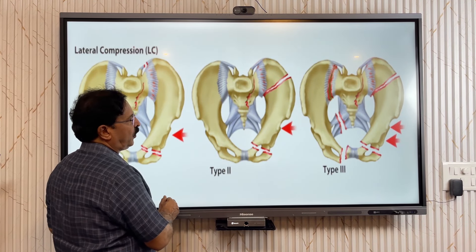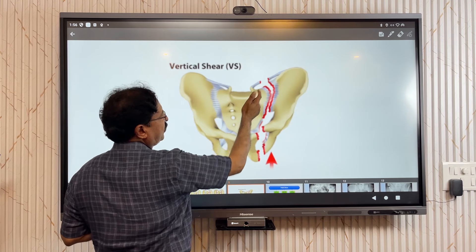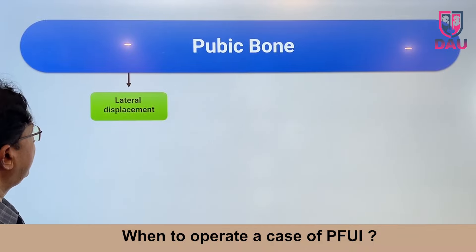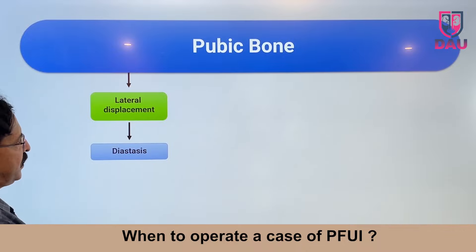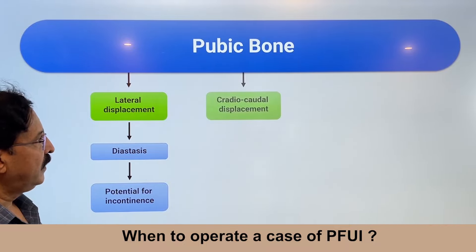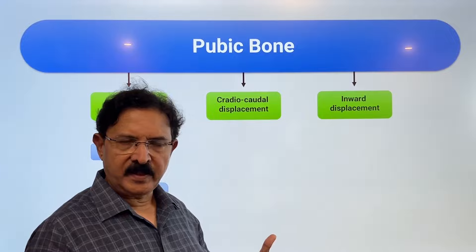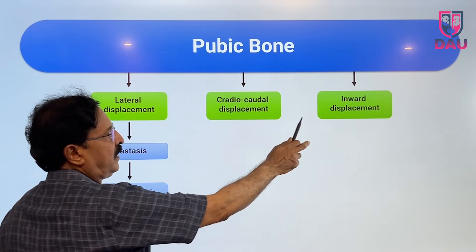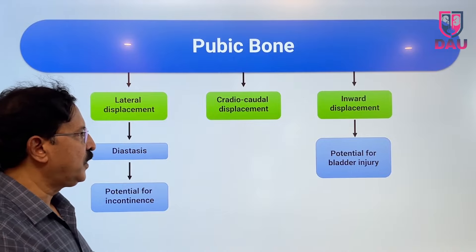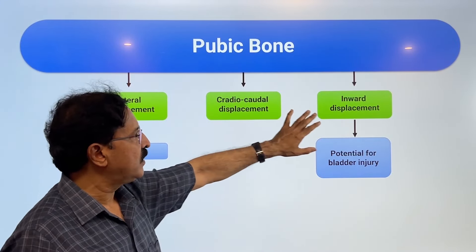This is an example of vertical shear where you have fractures here, here, and here, plus damage to the iliolumbar ligaments. First focus on the pubic bone. Is there a lateral displacement — meaning diastasis? Diastasis has the potential of causing incontinence. Is there a craniocaudal displacement? Is there an inward displacement — into the body — which can be seen on plain film or CT? This inward displacement of fractured ends can give rise to bladder or bladder neck injury.